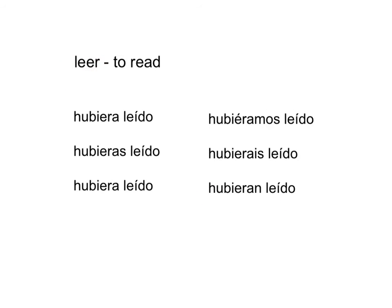En este ejemplo tenemos el verbo leer, to read: hubiera leído. Noten que tiene un acento sobre la i de la terminación. Eso ocurre con todos los verbos que terminan en -er o -ir que tienen vocal — vocal significa vowel — directamente antes de la terminación. So because there's an e directly in front of the -er, we need this accent over the i, and that will hold true for any verbs that end in -er or -ir preceded by a vowel. So: hubiera leído, hubieras leído, hubiera leído, hubiéramos leído, hubieras leído, y hubieran leído.